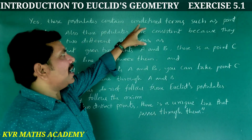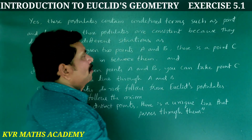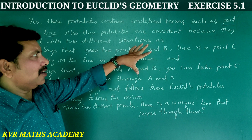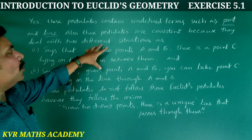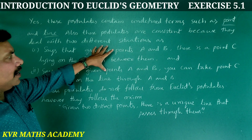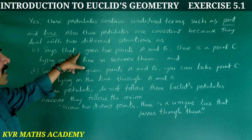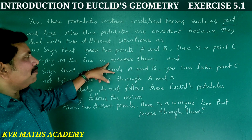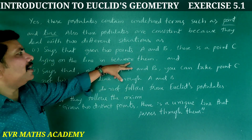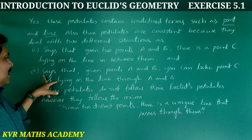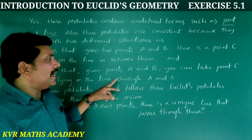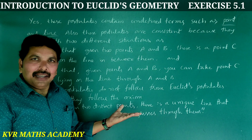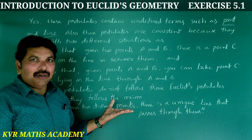These postulates contain undefined terms such as 'point' and 'line'. These postulates are not consistent because they deal with two different situations. The first one says that given two points A and B, there is a point C lying on the line between them. The second says that given points A and B, you can take a point C not lying on the line through A and B.